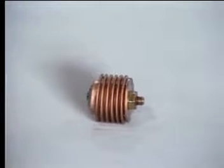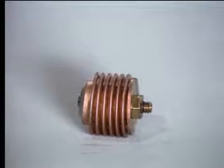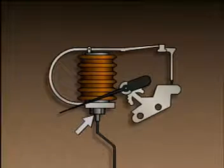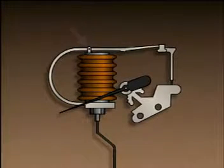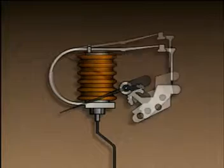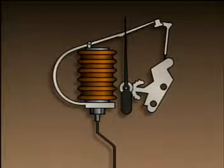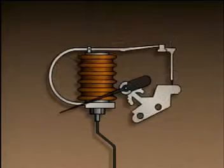Another pressure element used in industry is a bellows. A bellows is basically a movable accordion-shaped tube. In this arrangement, one end of the bellows is connected to a pressure source, while the other end is connected to a mechanical linkage used to move a pointer up and down a scale. When pressure is applied, the bellows expands and the mechanical linkage moves the pointer. When pressure is removed, the bellows contracts and the pointer moves in the opposite direction.